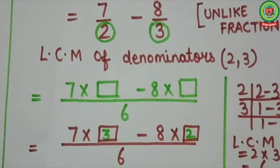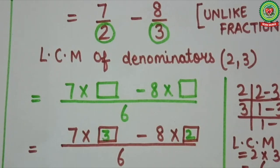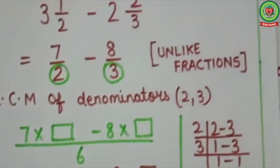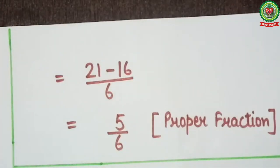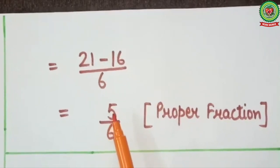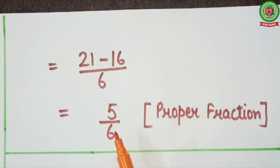Now, what is the next step? First we will multiply, then subtract. 7 threes are 21, and 8 twos are 16. So we will write 21 minus 16 upon 6. 21 minus 16 equals 5. It will come 5 upon 6. Numerator is lesser than denominator, so it is a proper fraction.